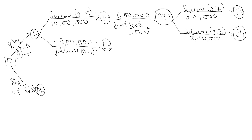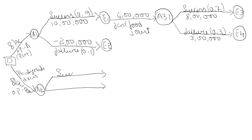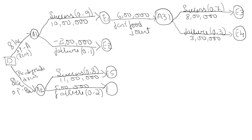Coming to the second part — Option 2. He wanted to start a ready-made dress showroom. Here the options were only two. If it is a success: 80%, so 0.8, with an amount of 11 lakh — this is E5. If it is a failure: 5 lakh at a probability of 0.2 — this is E6. The decision tree is now complete.